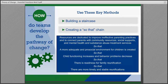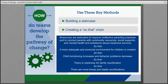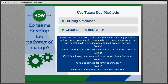The SO-THAT method can also illustrate when there are two causal links that may need to happen at the same time, by replacing the connector SO-THAT with AND. In the example, the team starts with the problem statement: resources are dedicated to improve ineffective parenting practices and to connect parents with community resources, social supports, and mental health and substance abuse treatment services. They then build the first SO-THAT link: a more adequate and pro-social environment for children is created, so that child functioning increases and behavior problems decrease, so that there is readiness for family reunification, so that there are more timely and stable reunifications.